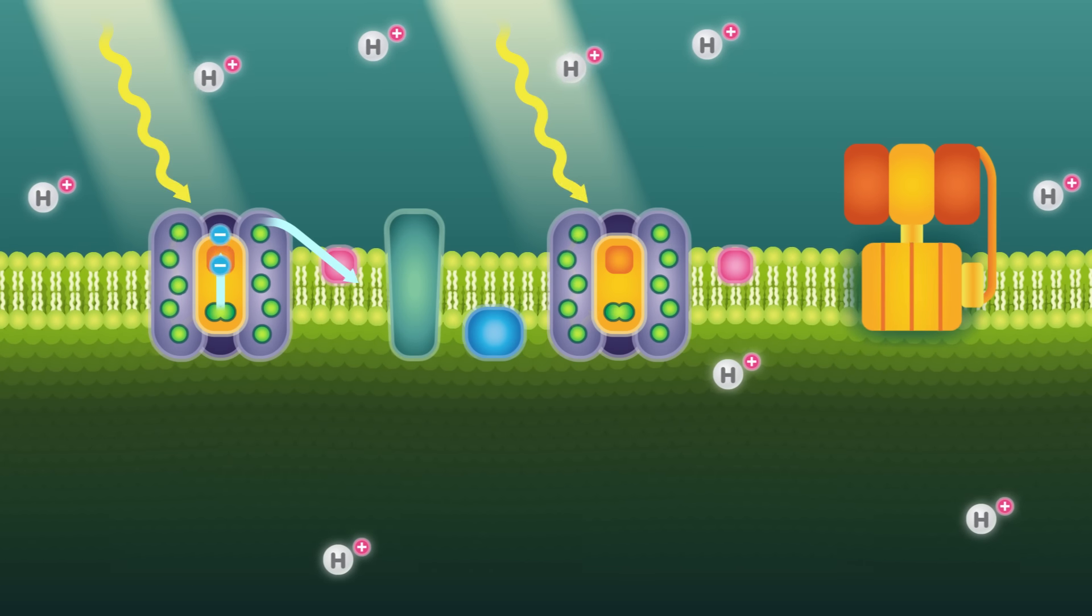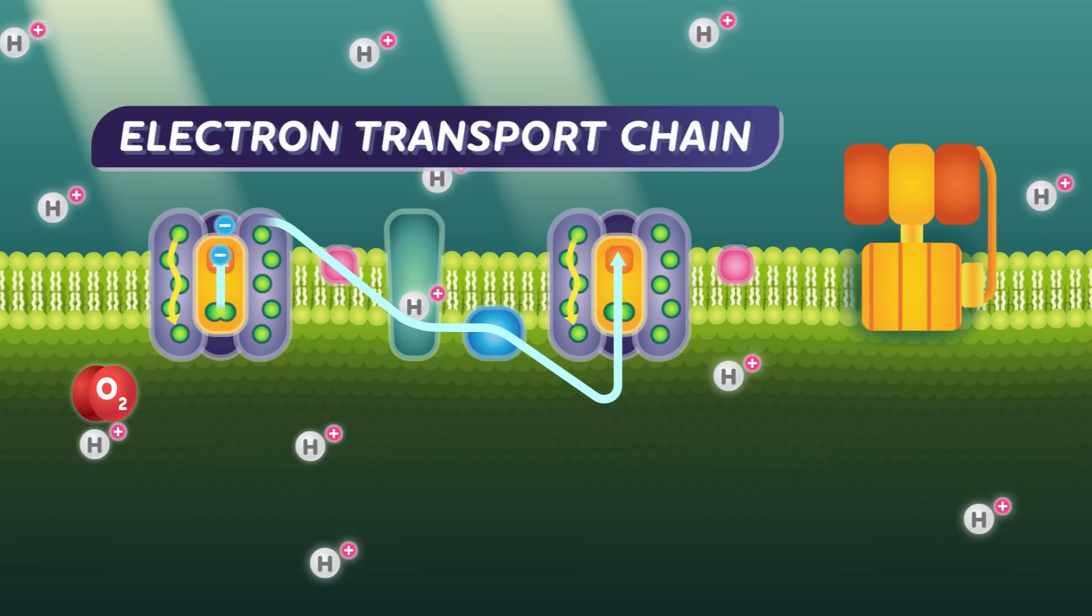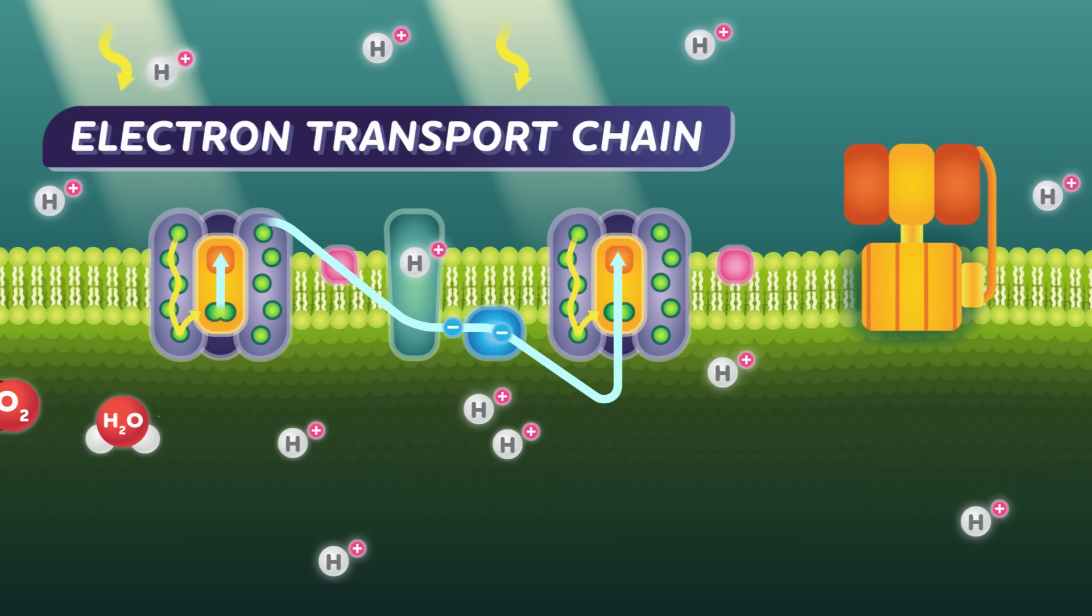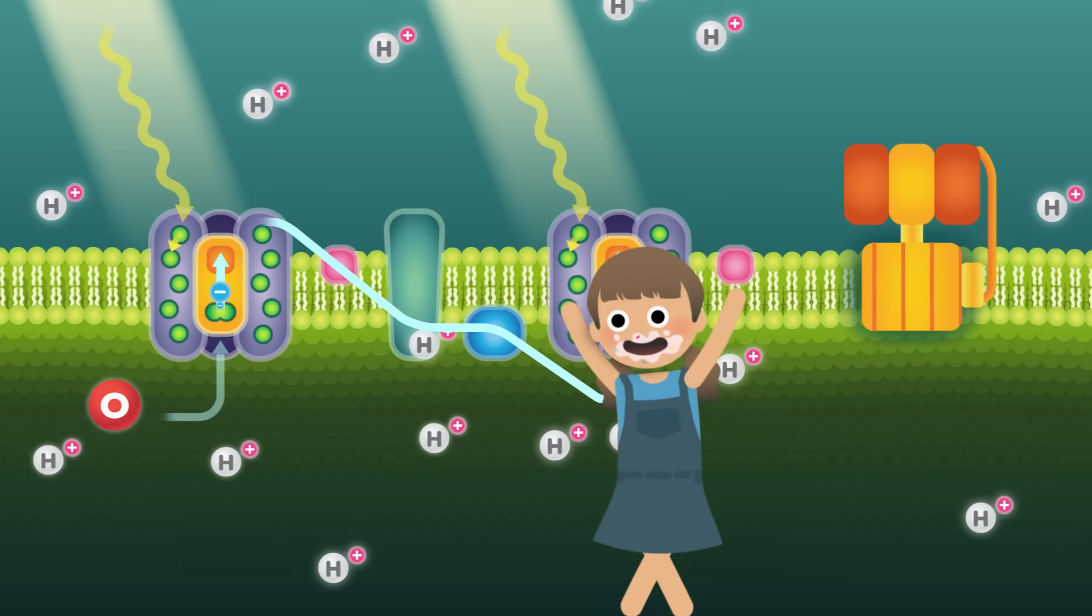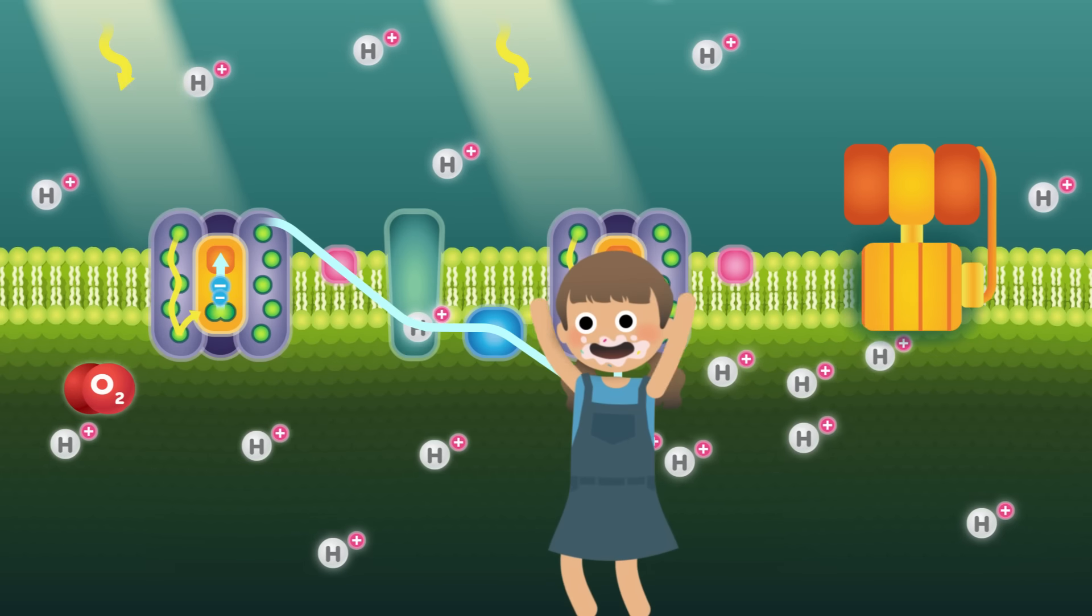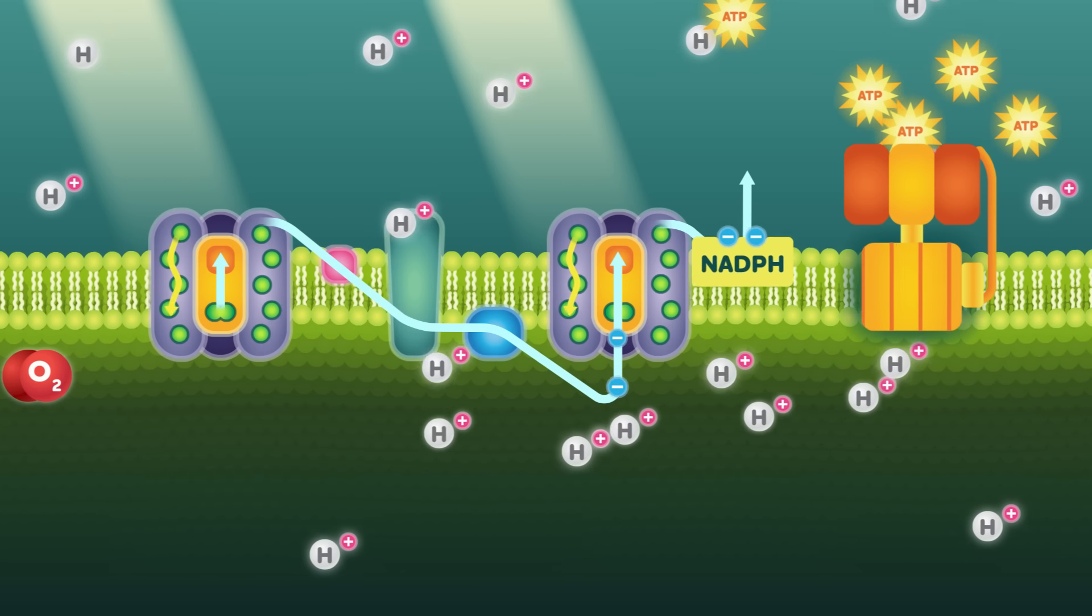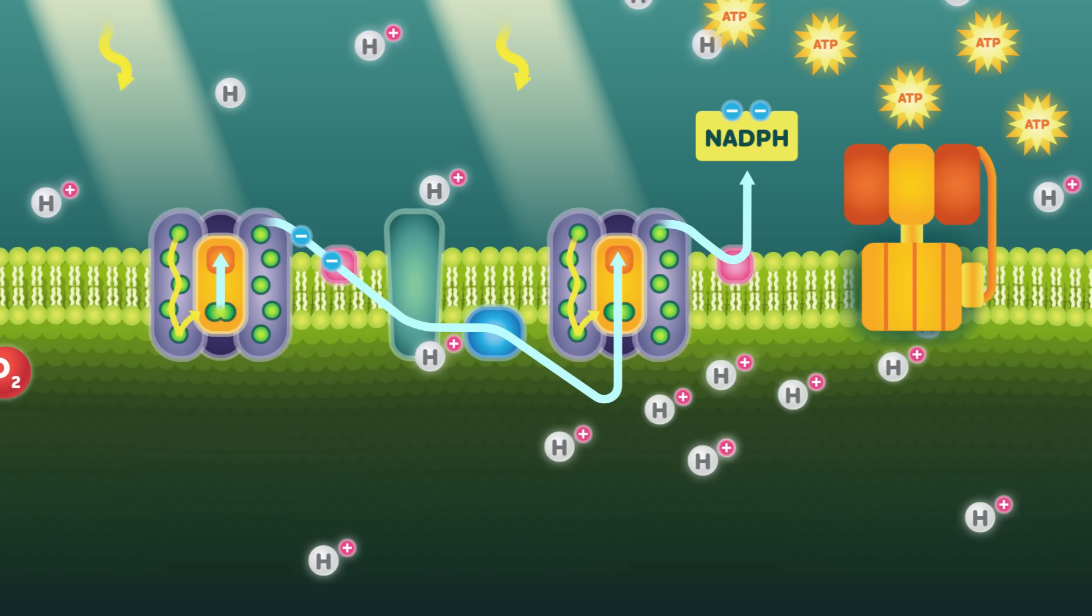Anyway, these electrons are energized in the same way that a toddler hyped up on soda and birthday cake is. They are very unstable, and it's easy for them to release their extra energy, which the chloroplast is happy to take advantage of. The electrons are shuttled through a series of proteins inside the chloroplast, called the electron transport chain. With every step in the chain, the electrons lose a bit of their extra energy, like if our sugar-hyped toddler was taking little five-minute naps. And at the end of the process, the chloroplast has used the energy released from the electrons to make two new molecules, the energy-storing ATP and NADPH, which is like an electron bank. But we'll circle back to those two in a minute.